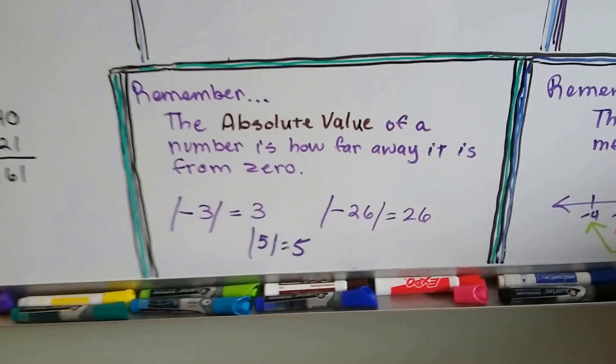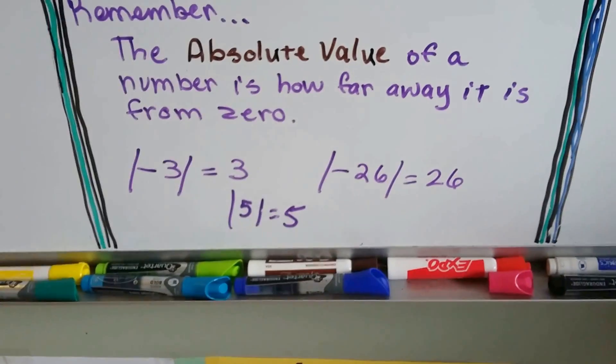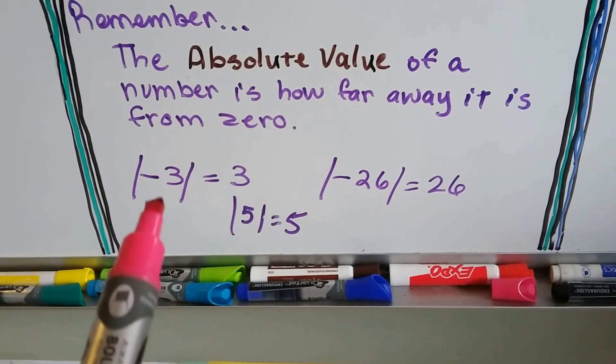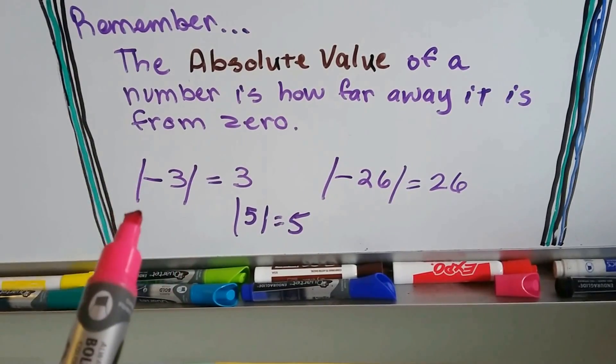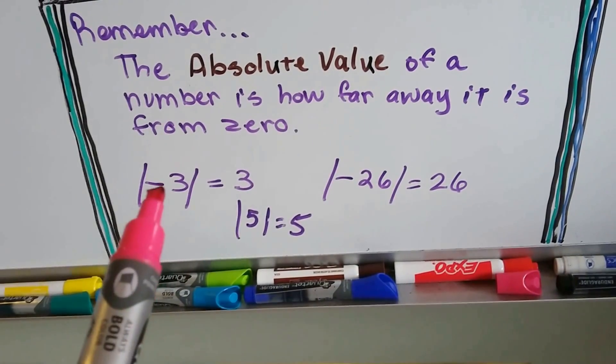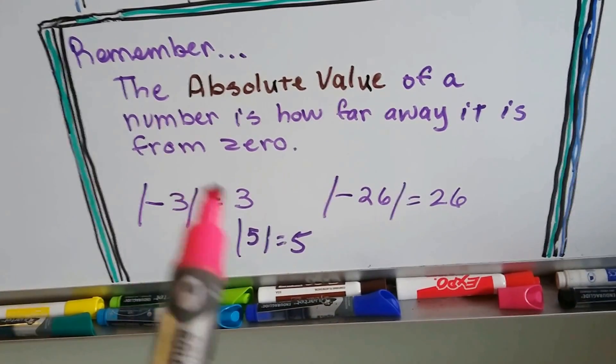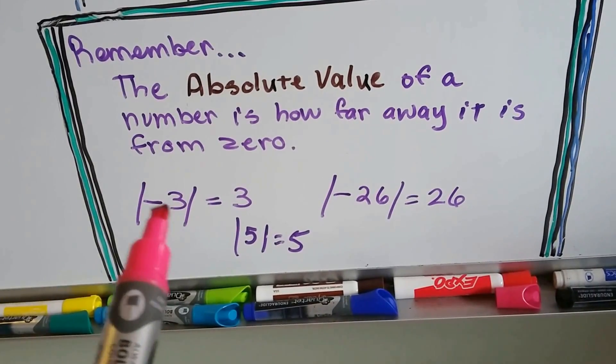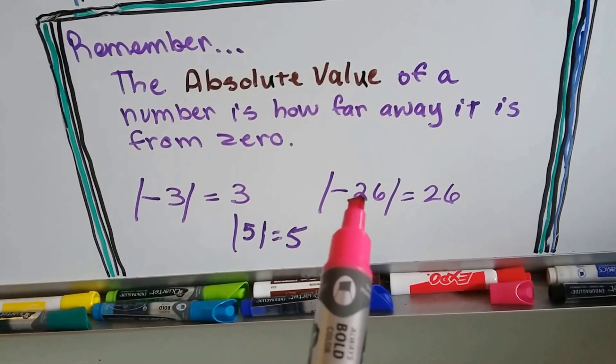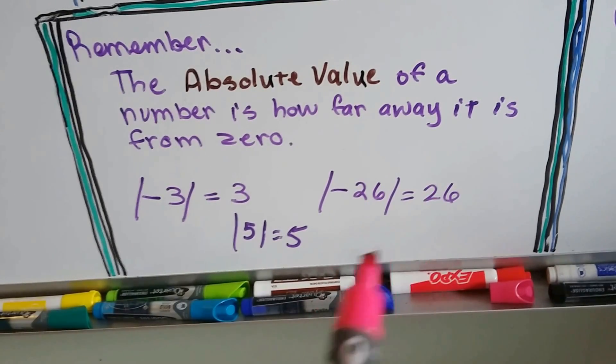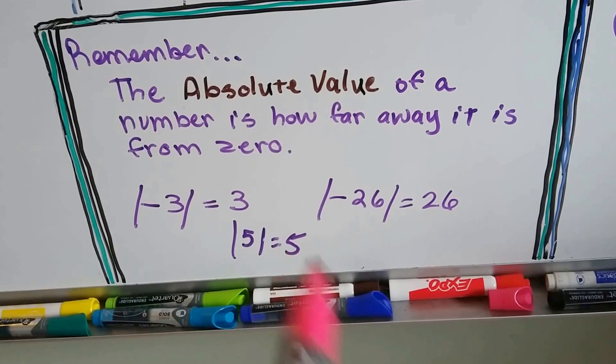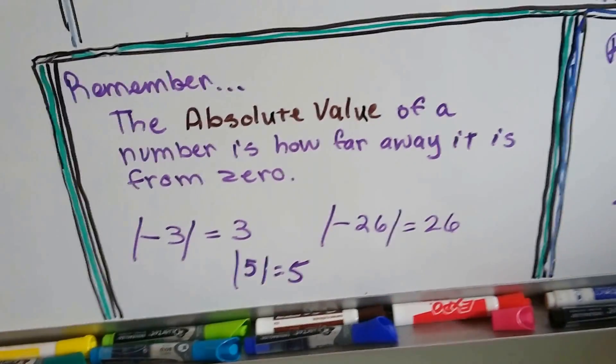The other thing I want you to remember before the next chapter is that the absolute value of a number is how far away it is from 0. If you see these two lines slanted like this, that means absolute value. And if you see a number inside of it, that just means they're asking you how far is it away from the 0 on the number line. Negative 3 is 3 spaces away from 0. Negative 26 is 26 spaces away from 0. A positive 5 is 5 spaces away.